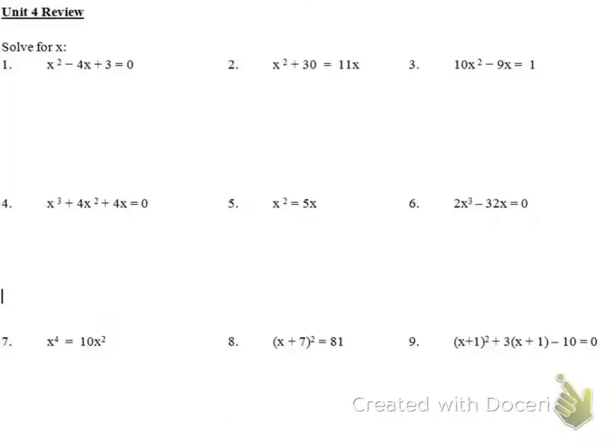We're looking at the unit review for the Algebra 2 first semester final. For number one we're going to solve for x. These first nine problems are really going to be looking at factoring. Once we factor it down we set each term equal to zero using the zero product property, which allows us to solve for the equation.